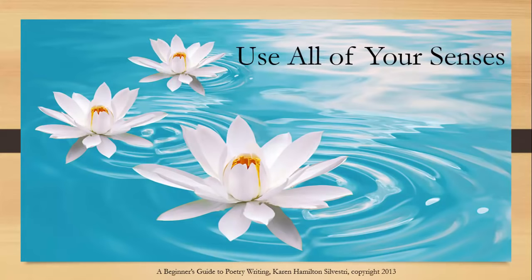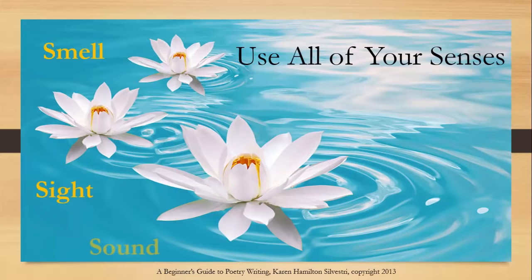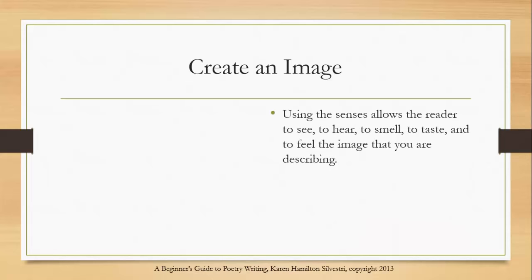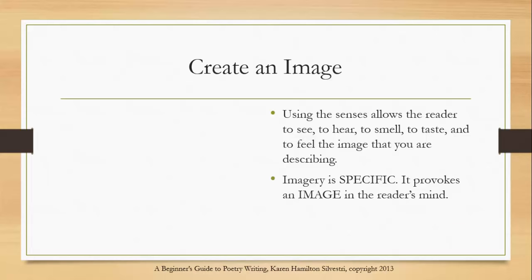When we use imagery, we use all of our senses: smell, sight, sound, taste, and touch. What poets are trying to do is create an image of a feeling — it's often a feeling so difficult to describe that the only way to describe it is by using an image. Using the senses allows the reader to see, to hear, to smell, to taste, and to feel the image that you are describing. Imagery tends to be very specific; it provokes a very specific image in the reader's mind, like Robert Frost did in his poem Desert Places.